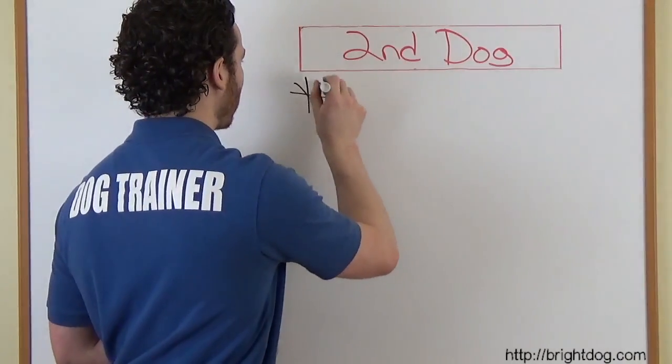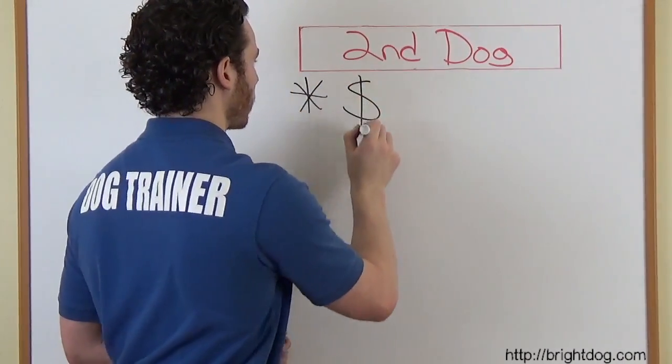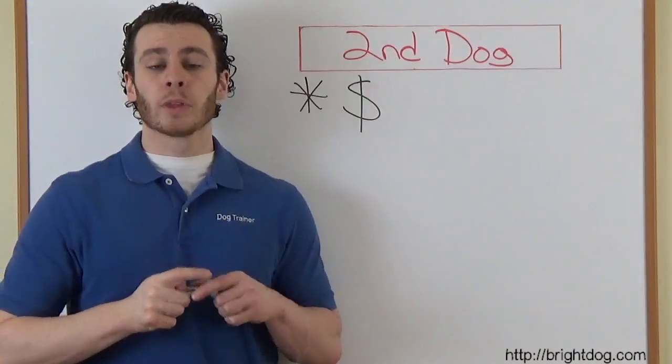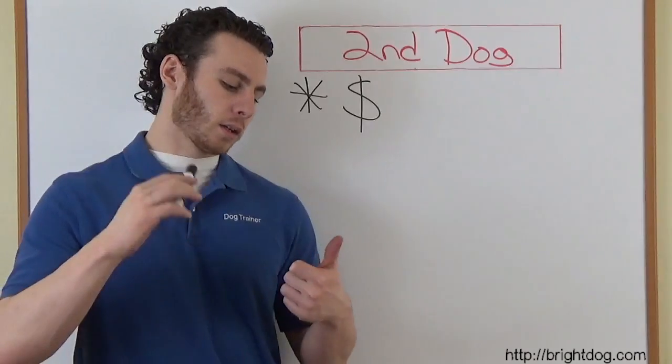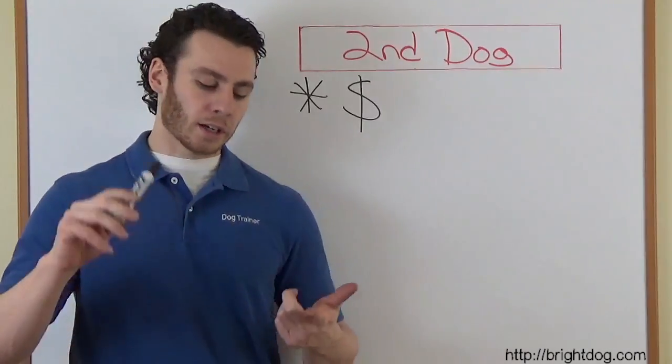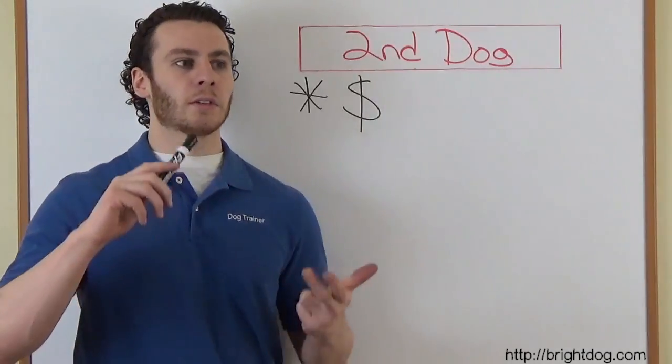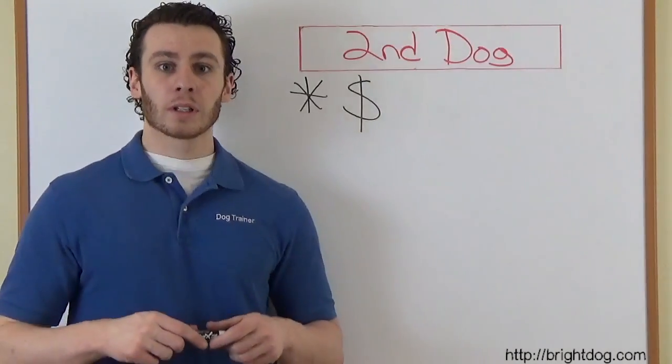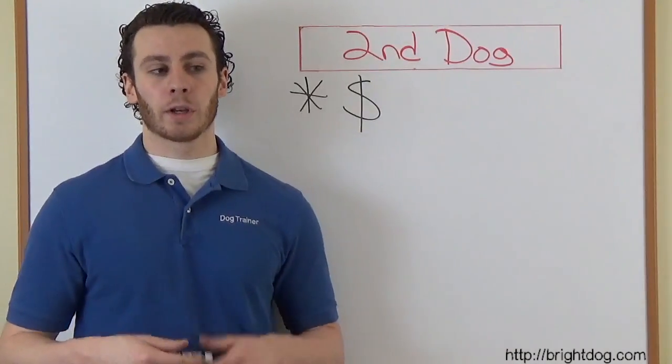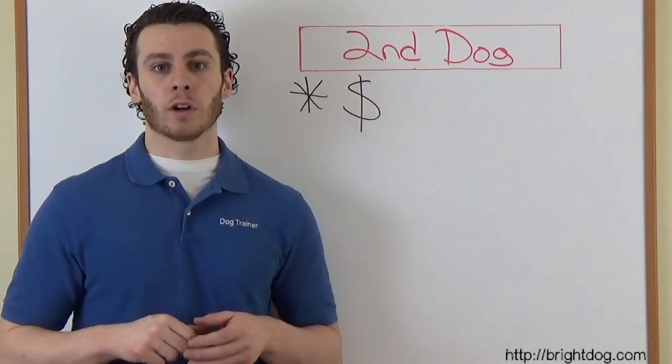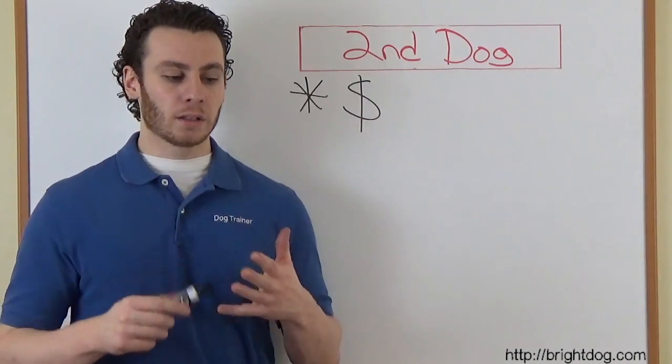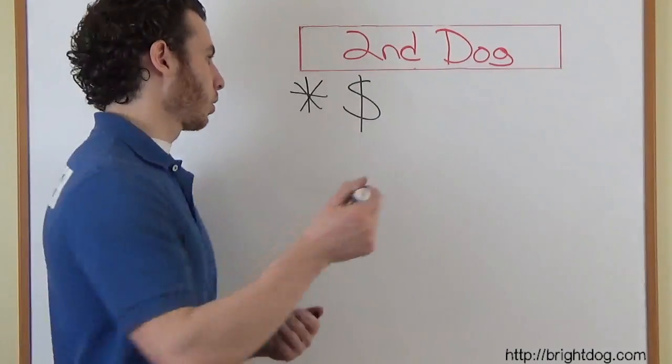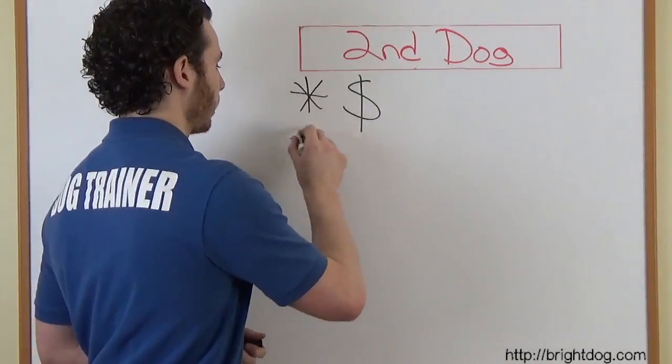So the first one, it might be kind of obvious but it's important to talk about, is the money. You've got to make sure that financially you're going to be able to afford it because remember, a second dog means a second set of licensing fees, a second set of food, second set of veterinarian bills, second set of grooming bills. It definitely adds up. I know my own dog is expensive enough, I only have one dog. Adding a second dog, the money does add up. So you want to make sure that you can financially afford to get that second dog, number one.